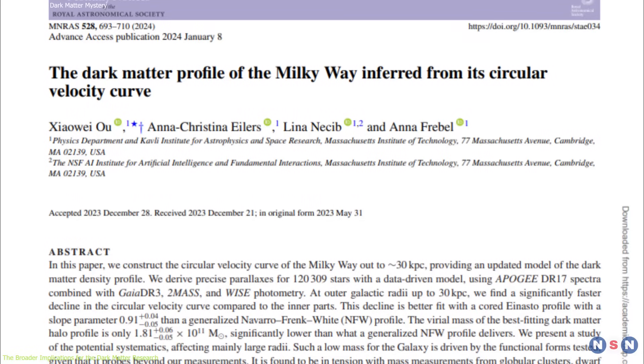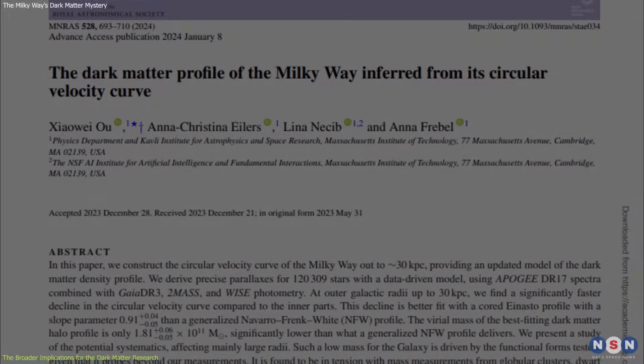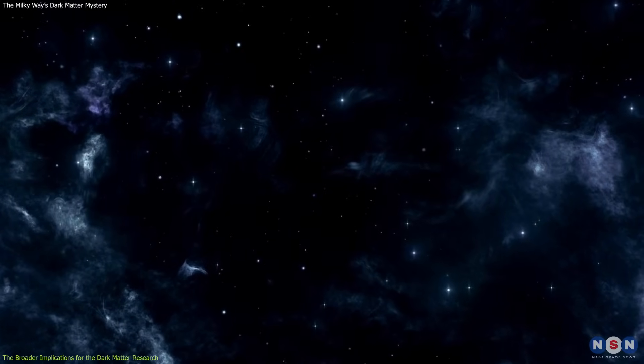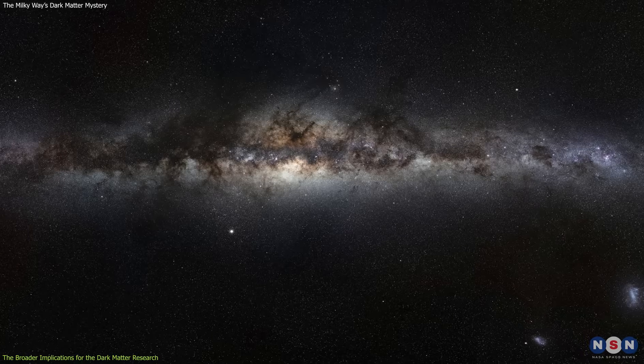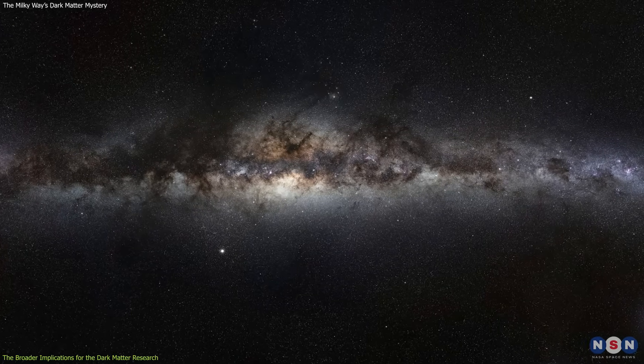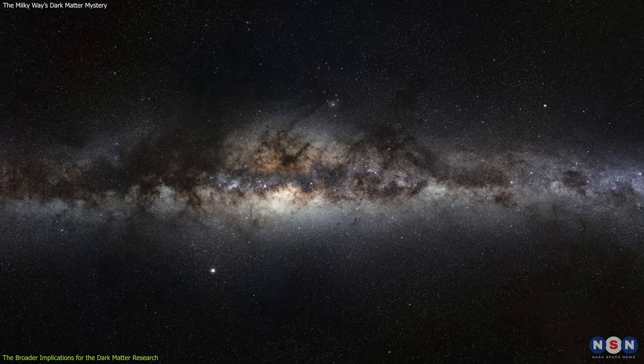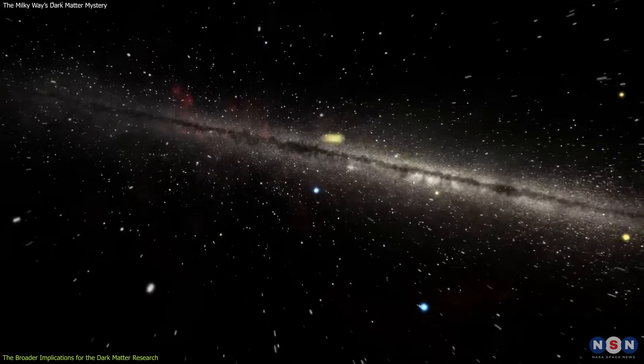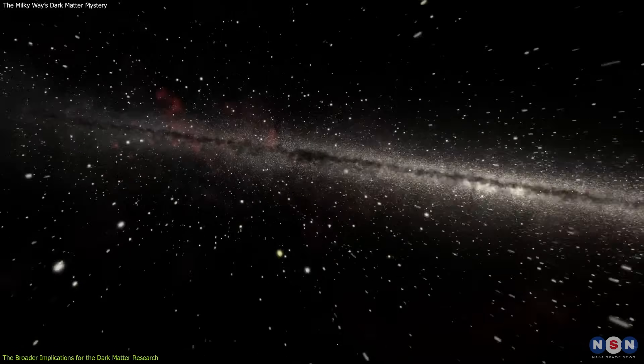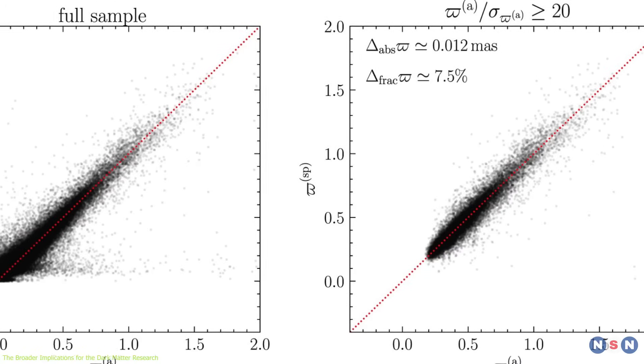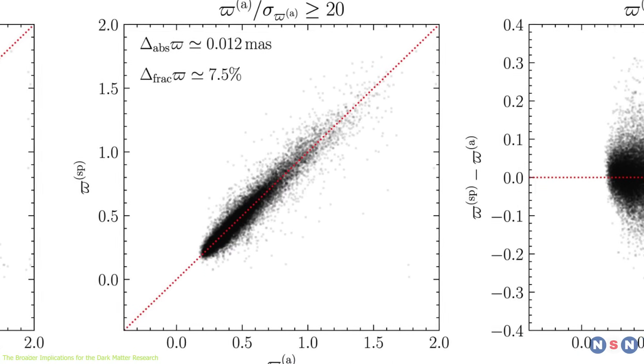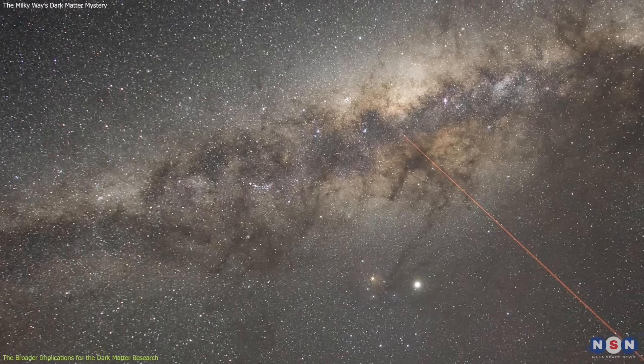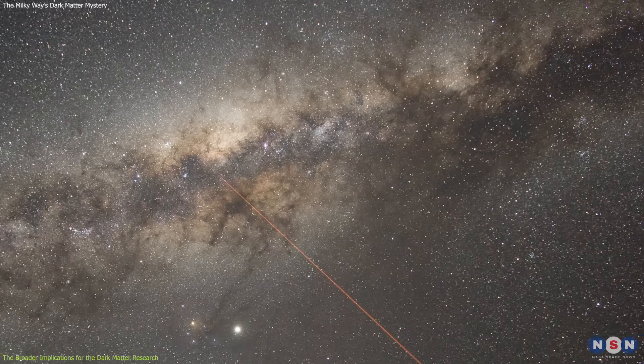This study also challenges and stimulates dark matter research by raising new questions and opening new possibilities for the detection and study of dark matter. It suggests that the dark matter in the Milky Way galaxy may be more elusive and more subtle than we thought, and that it may require more sensitive and sophisticated methods and instruments to be revealed and measured. It also implies that the dark matter in the Milky Way galaxy may be more diverse and more complex than we assumed, and that it may have different properties and behaviors in different regions and environments of the galaxy.